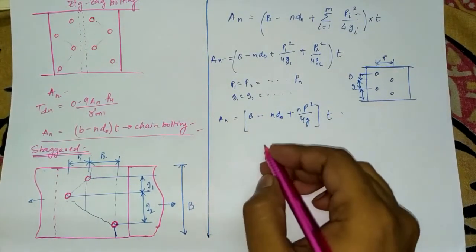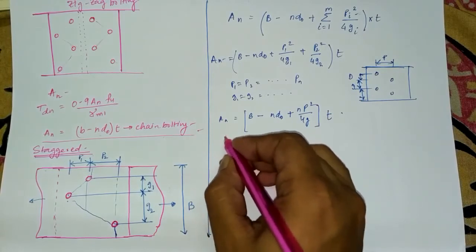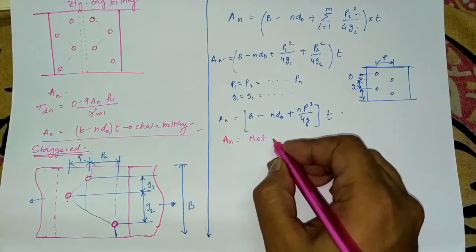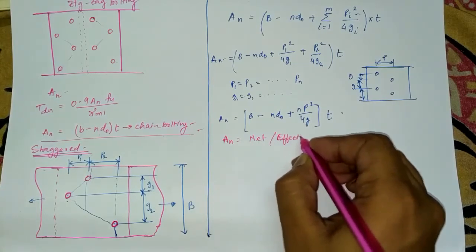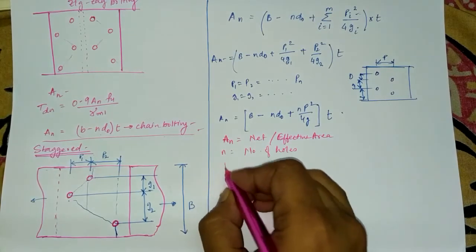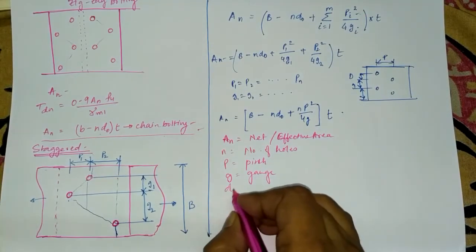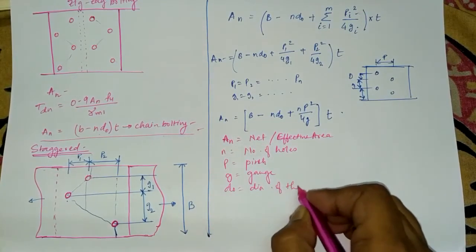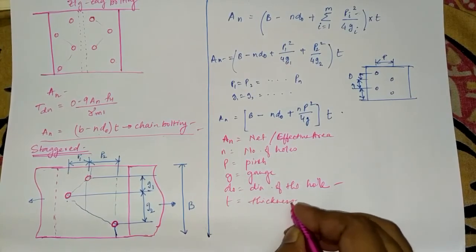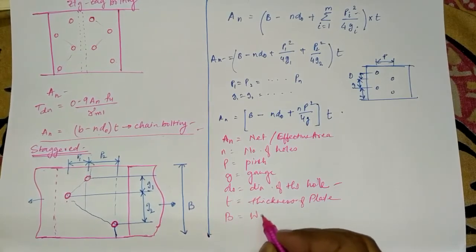This formula will become clearer when we do a numerical example. To define the terms: An is the net effective area; n is the number of bolt holes; p is the pitch; g is the gauge; d0 is the diameter of the hole; t is the thickness of the plate; and b is the width of the plate.